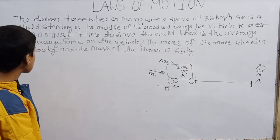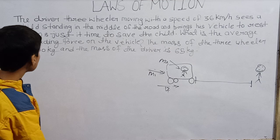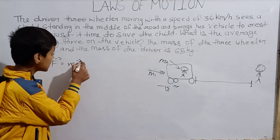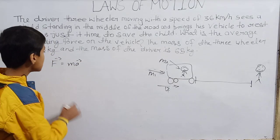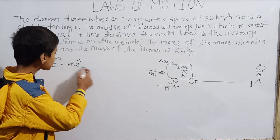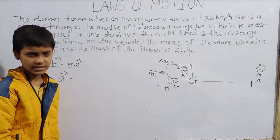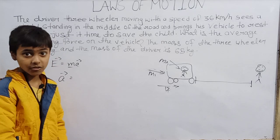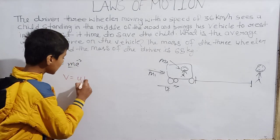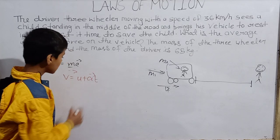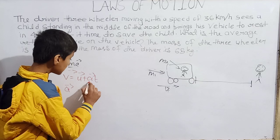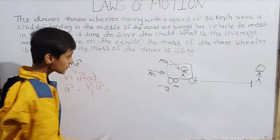What do we require? The average retarding force. Force equals mass into acceleration. I know the total mass and I need to find the acceleration. Let's start from acceleration using the first equation of motion: v = u + at, which gives vector a = (vector v − vector u) / t.